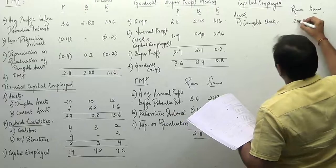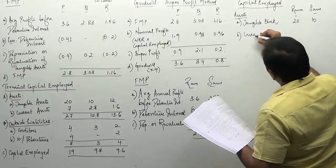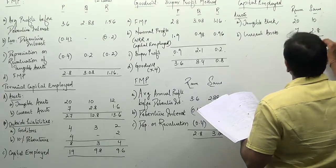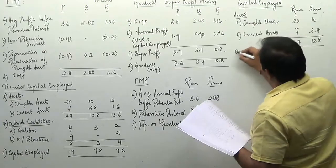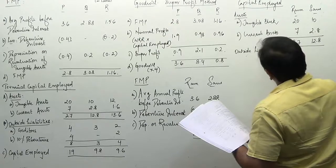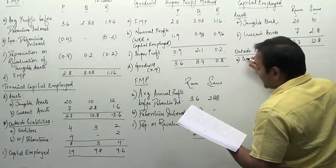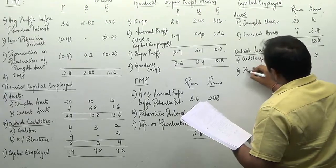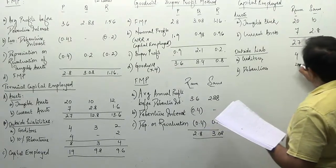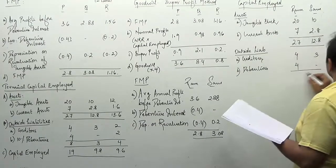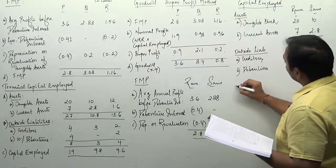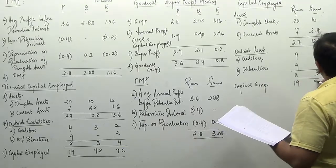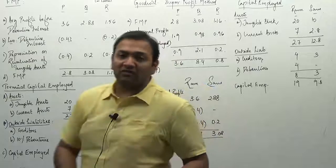Fill up revalued figures starting with assets. Tangible block: 20 and 10. Current assets: 7 and 2.8, giving total assets of 27 and 12.8. Reduce outside liabilities: creditors are 4 and 3, and 10% debentures are 4 and nil. Reserves and equity share capital are the remaining. Total outside liabilities are 8 and 3. Closing capital employed is 19 and 9.8. You can't calculate average because you don't have current year profits.